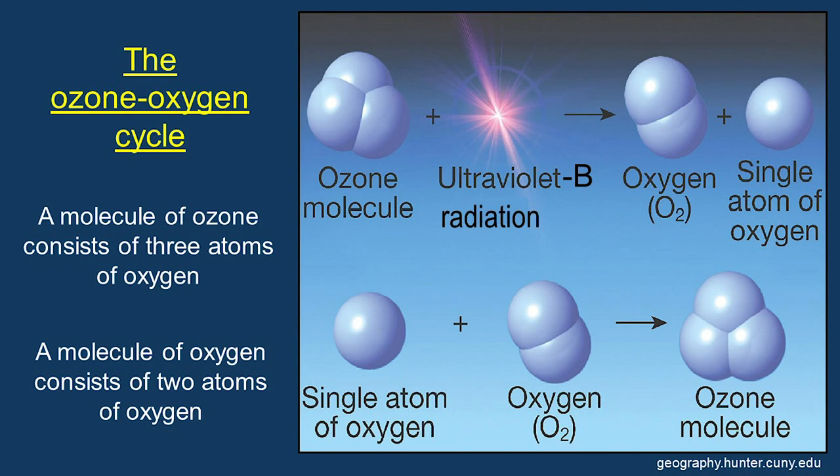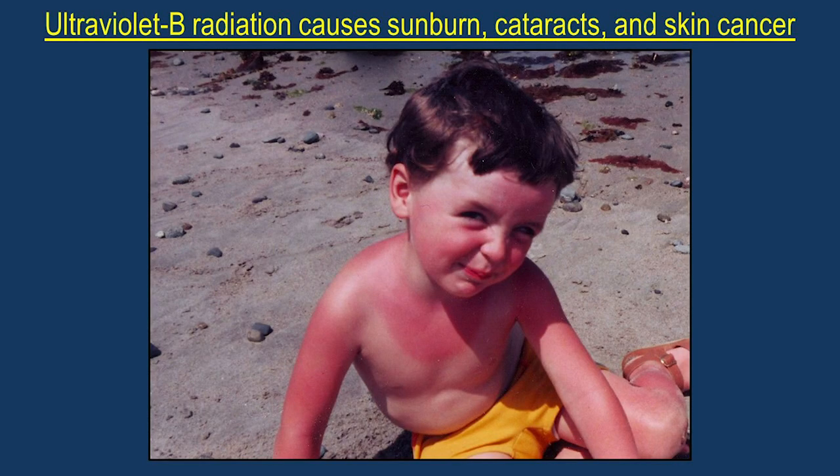The ozone layer protects life on Earth from the highest energy solar radiation normally reaching the lower atmosphere. At Earth's surface, this very energetic ultraviolet B radiation is observed to cause sunburn, cataracts, depression of the immune system, and genetic damage that can lead to skin cancer and mutations.